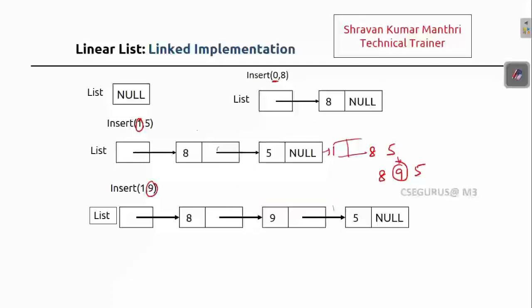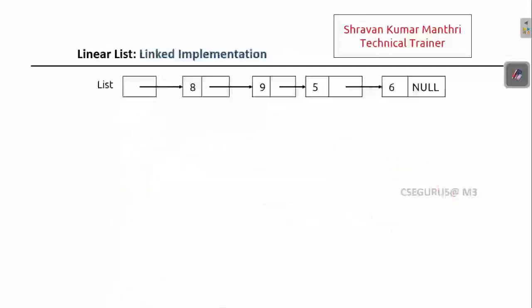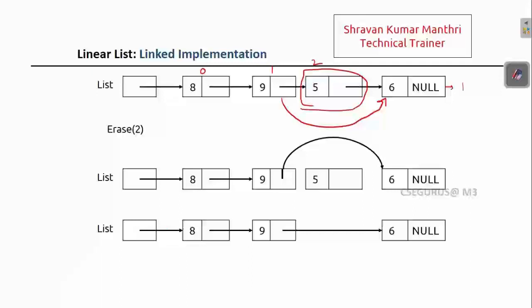The same applies to deletion. For example, if I insert a fourth element at index three, I go to the last node and insert directly. For erasure: if I want to erase the element at index two (value five), I simply connect the previous node's address pointer to the node after five. The remaining elements are untouched. The deletion complexity is O(1) — the connection is re-established directly, giving eight, nine, six with five deleted.